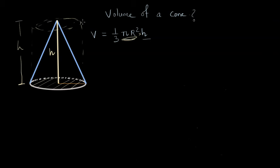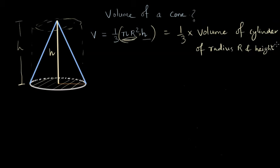But the volume of the cone is basically one third of the value π r² times h, which is nothing but one third of volume of cylinder of radius R and height h.